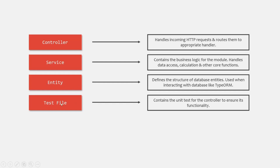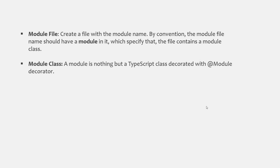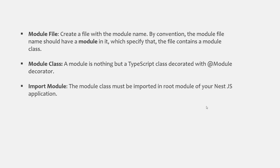We also have test files which contain the unit tests for the controller to ensure its functionality. Now when we define a user-defined module, the first thing we do is create a new file. Once we have created the module file, inside that we create a module. A module is nothing but a TypeScript class which we decorate with the @Module decorator. Any class which we decorate with the @Module decorator becomes a module class. Once the module class is created, it must be imported in the main module so that the NestJS application is aware about that new user-defined module.